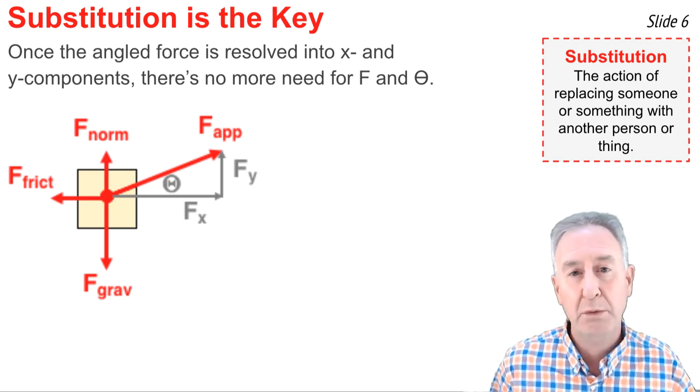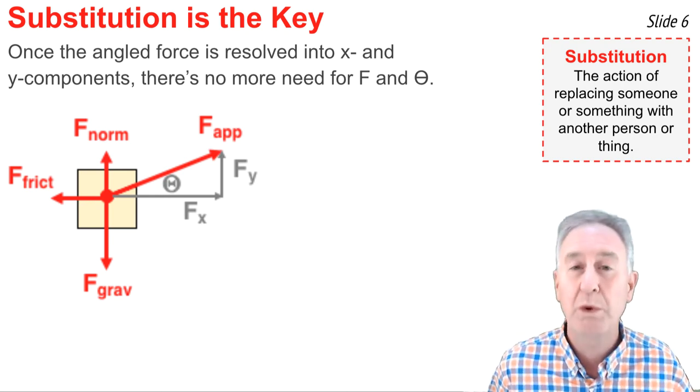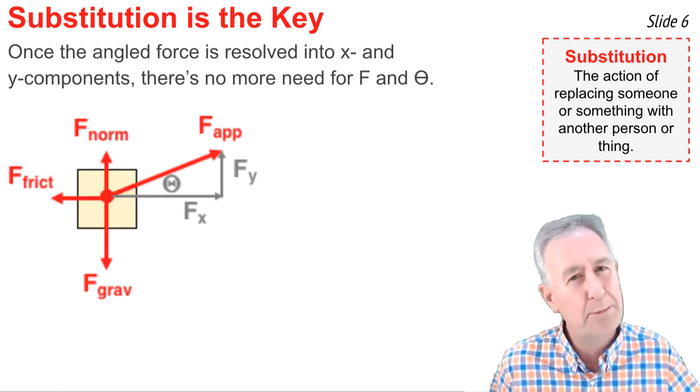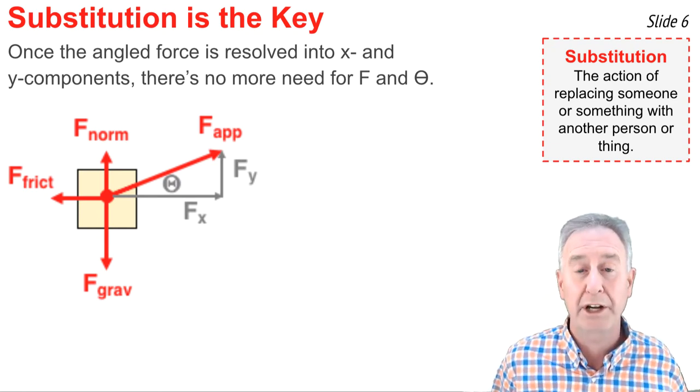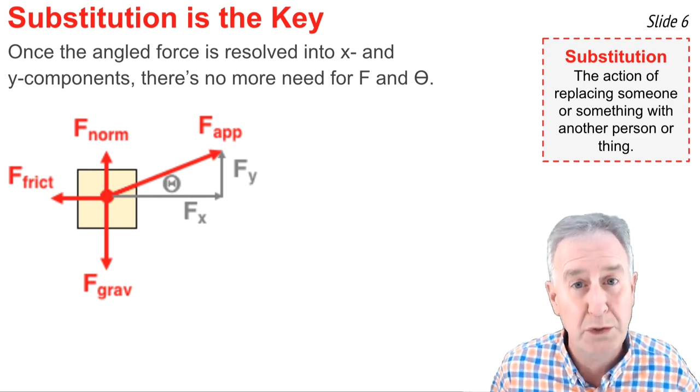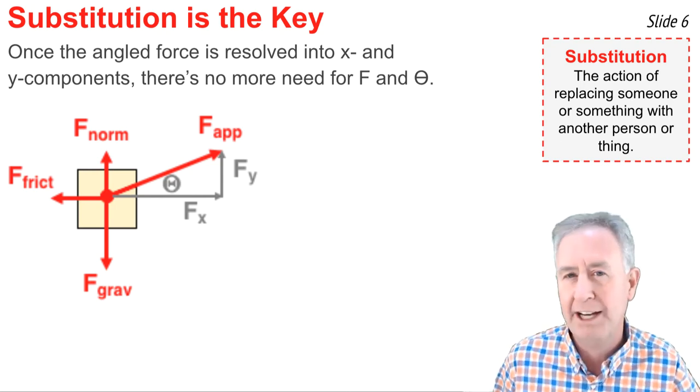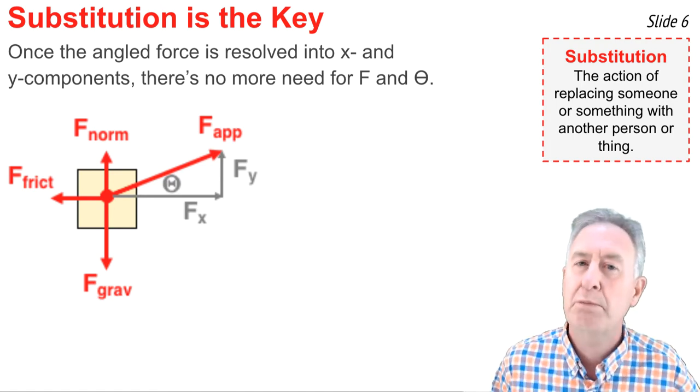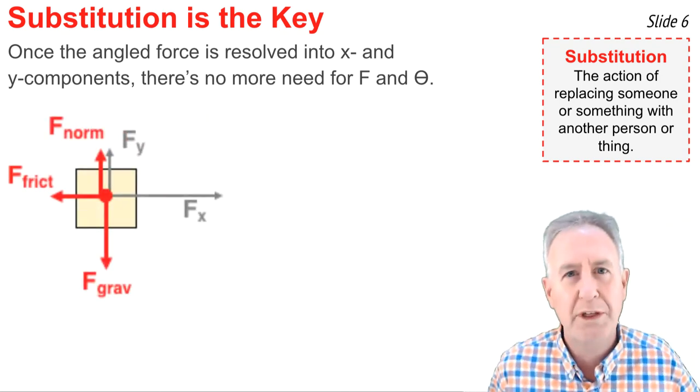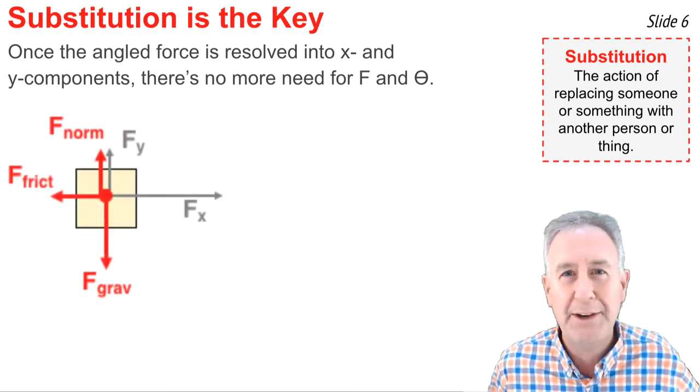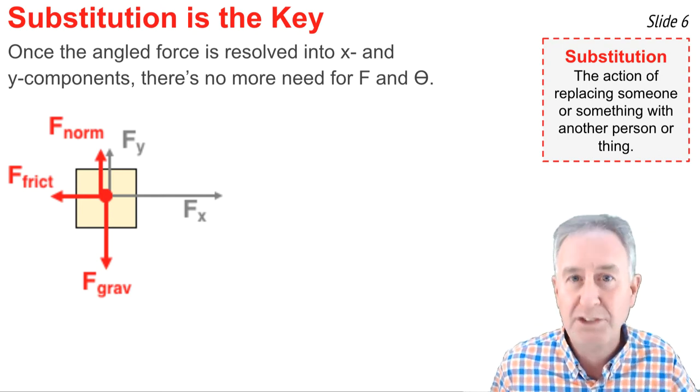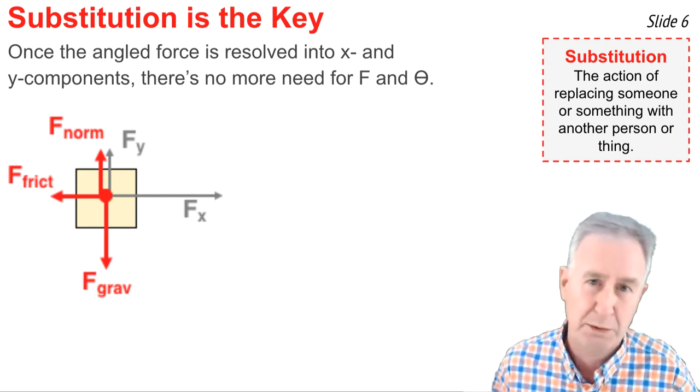Substitution is the action of replacing someone or something with another person or thing. We do it all the time in sports. We pull one player out of the game and replace the player with another player. In this type of problem, we can do substitution. We can pull the F applied and theta out of the game and replace it with Fx and Fy, something like this. Now once we do that, all the forces are up, down, left, and right, and we said that's an easy problem. So that's the key to analyzing this situation.